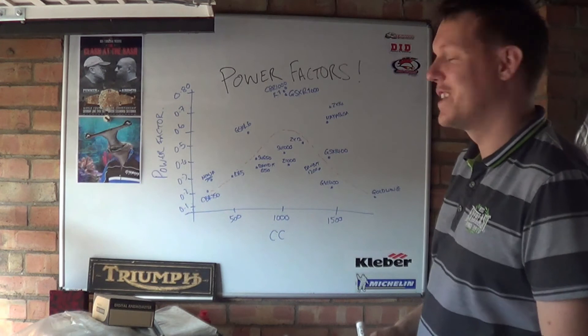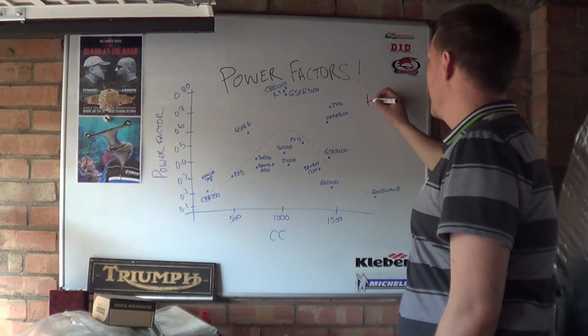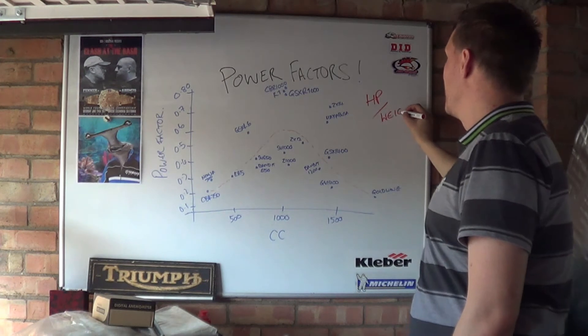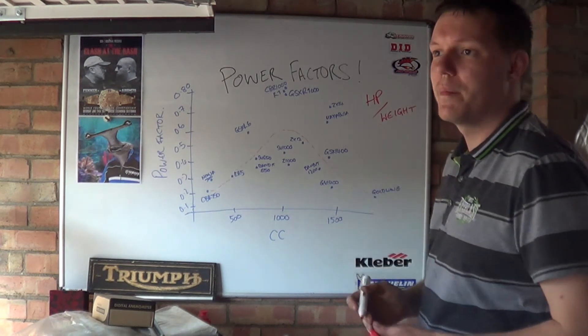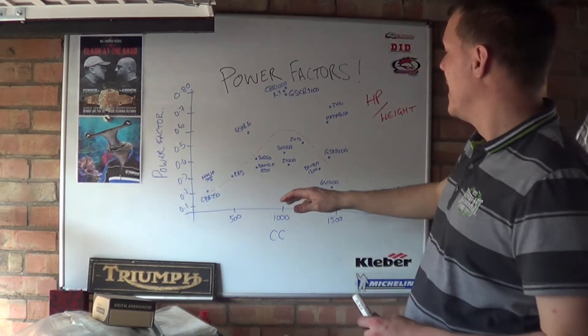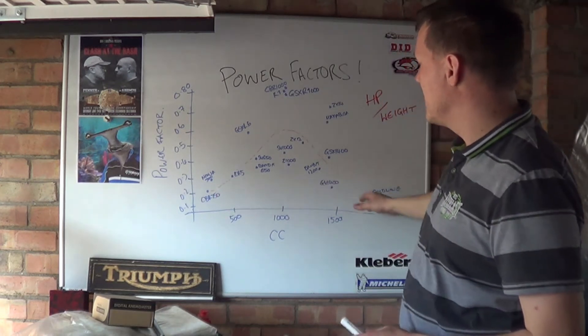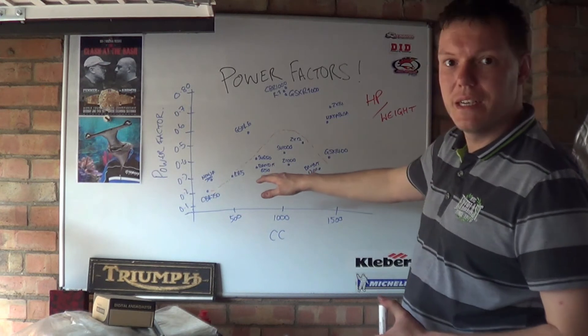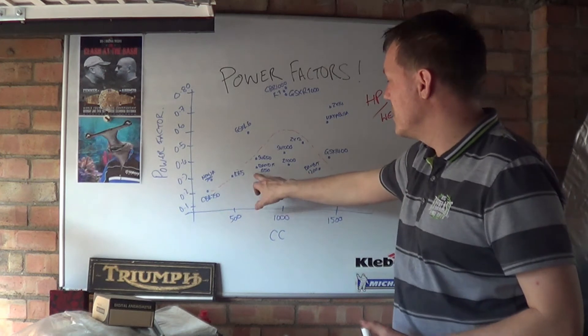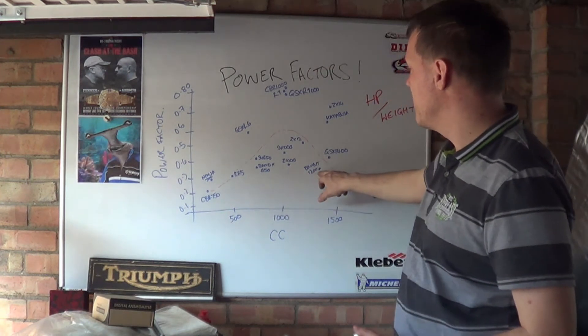So one of the first things you're going to do is take your horsepower and then divide it by your weight. That'll give you your number. So you might be tapping away doing that now on your calculator or on your phone. And as you can see all these bikes lie on this graph where they do.